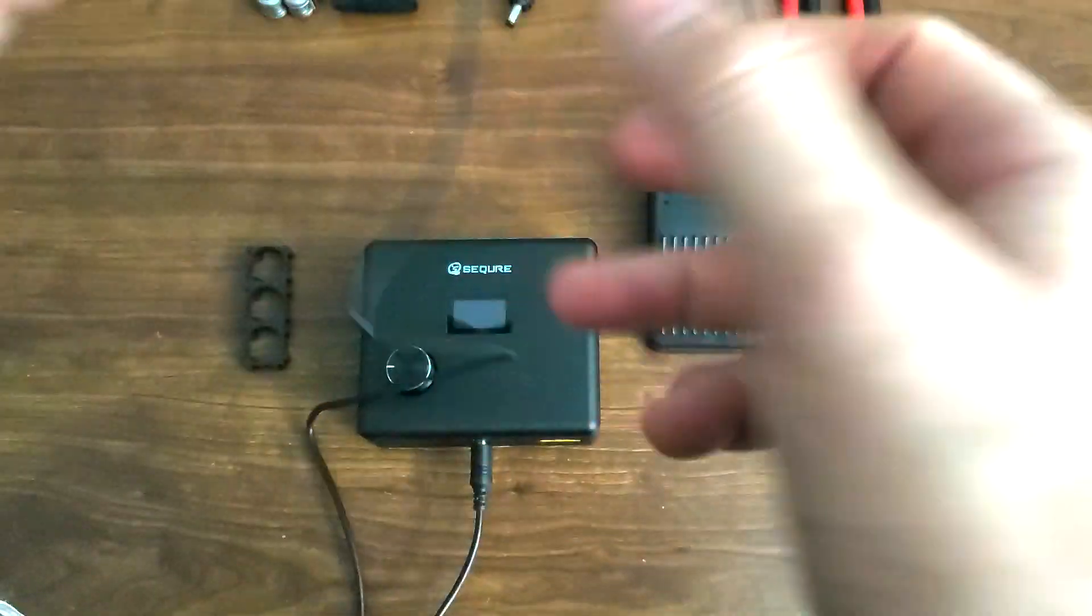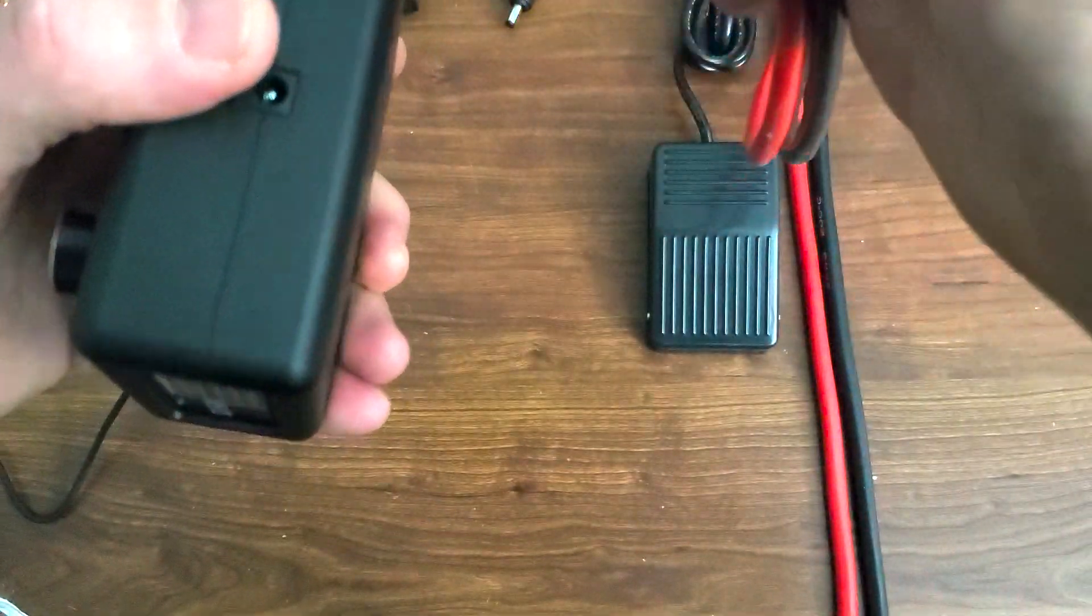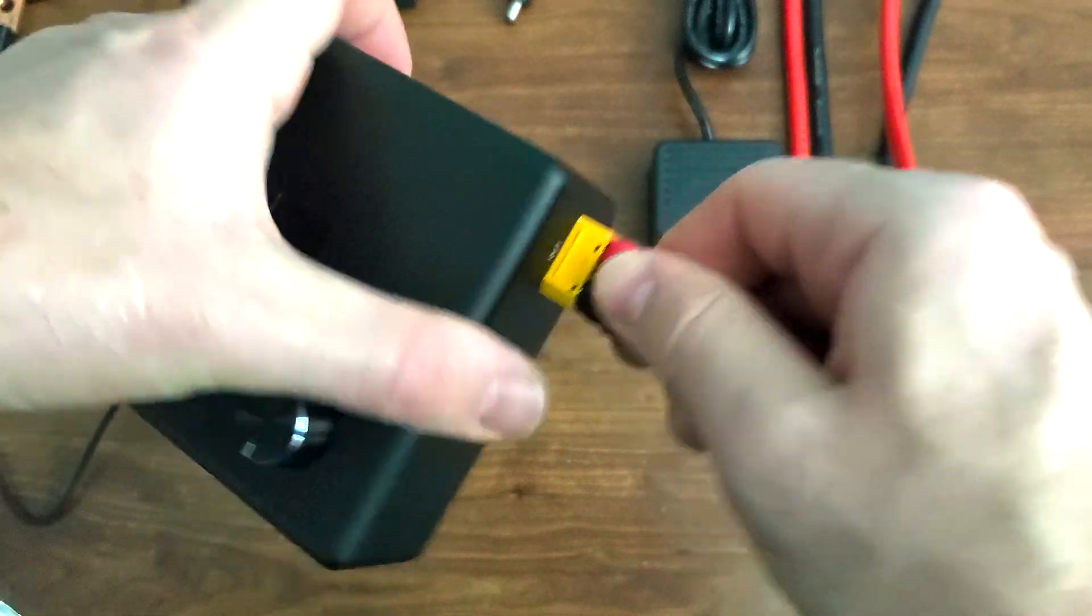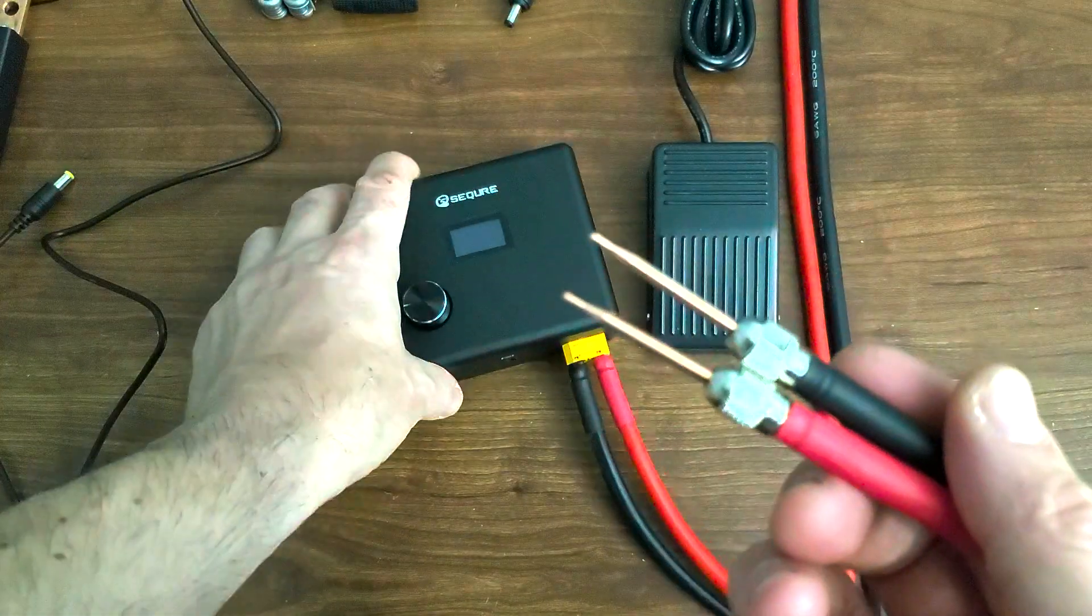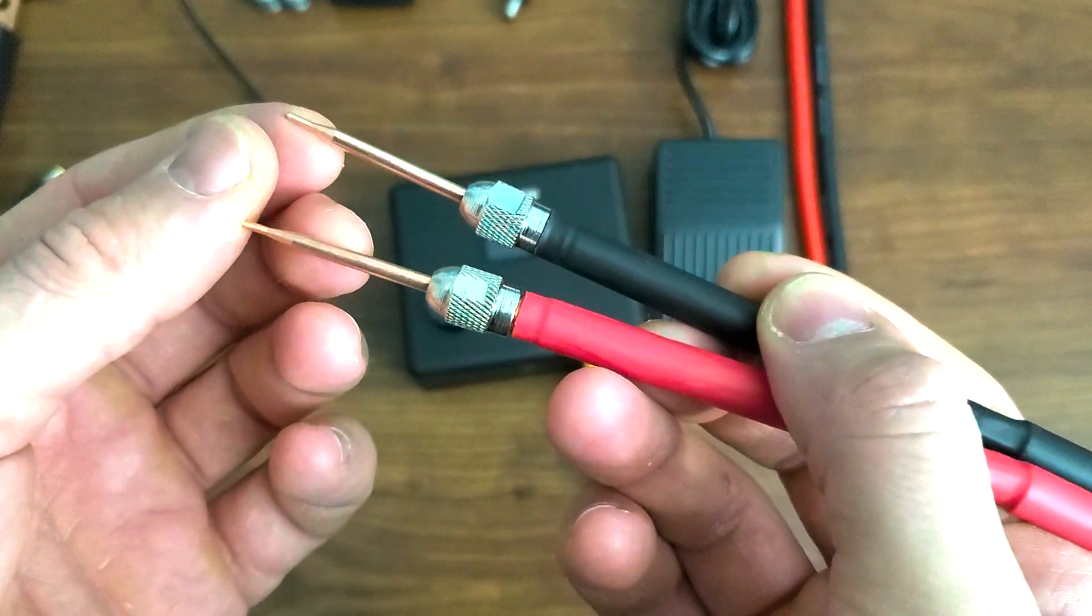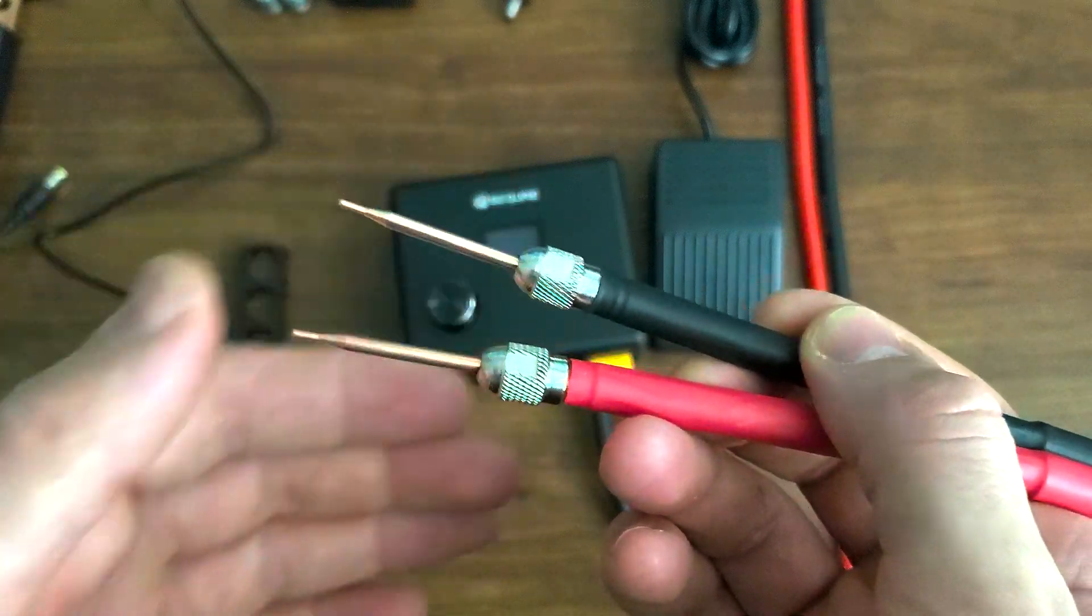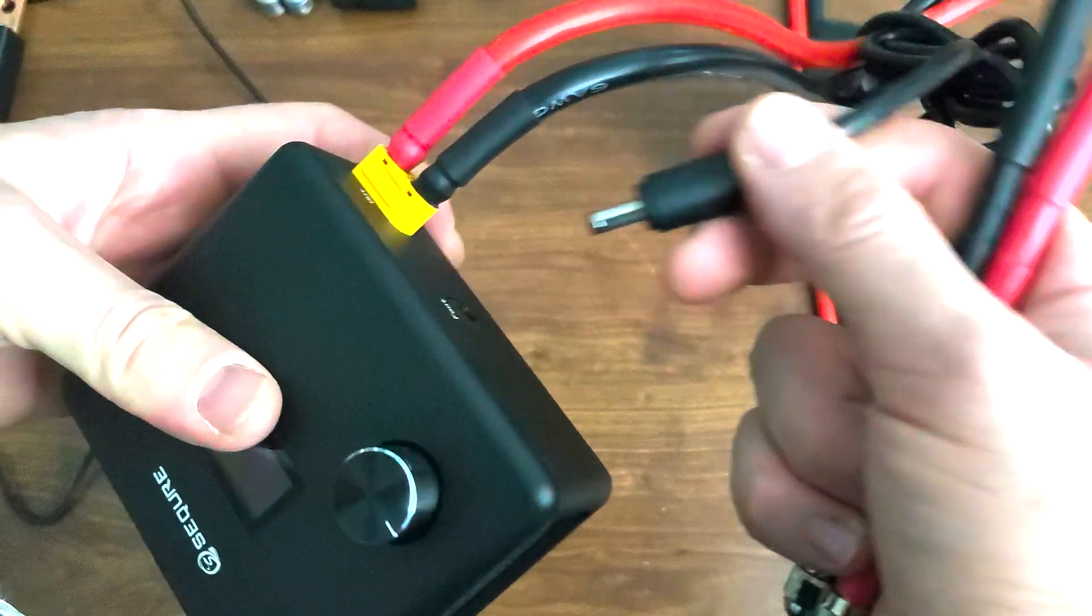The second option will be using this type of handles. Make sure you connect in and out. This is the type of handles you can use. Have the tips. Make sure they're really tight in here. The foot pedal is going to go right here on the side.